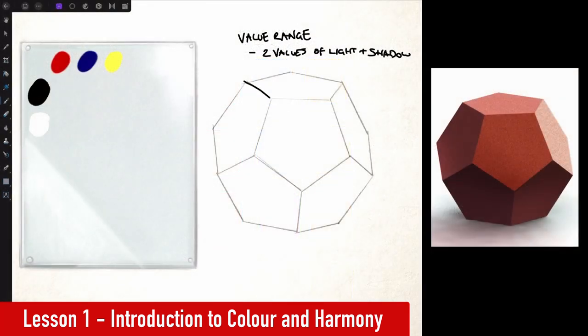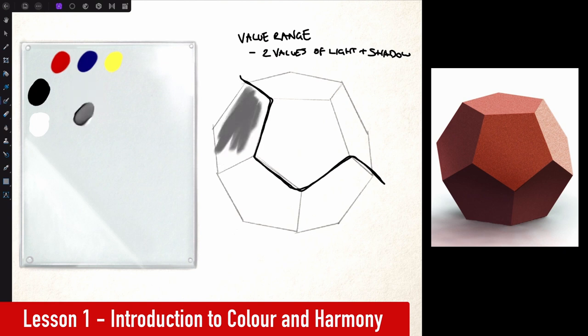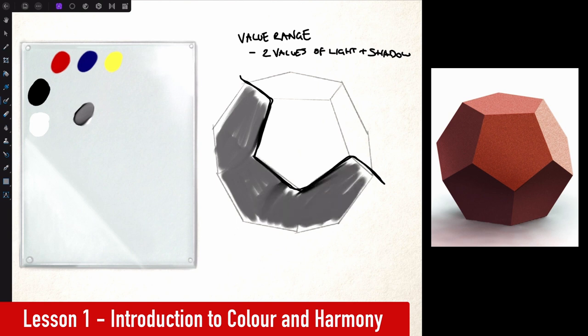Before we start worrying about the rest of our values, hue, and saturation, we have to construct where our light is coming from and where our shadows are being formed. So painting in a little rough sketch like this just helps to get the ball rolling.